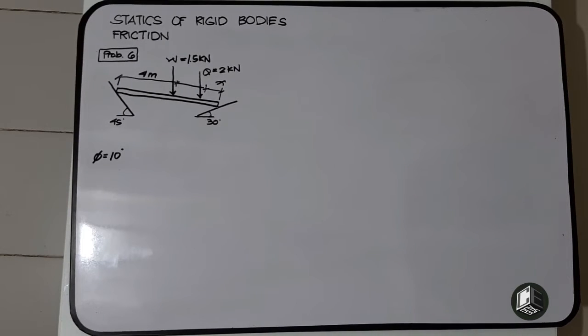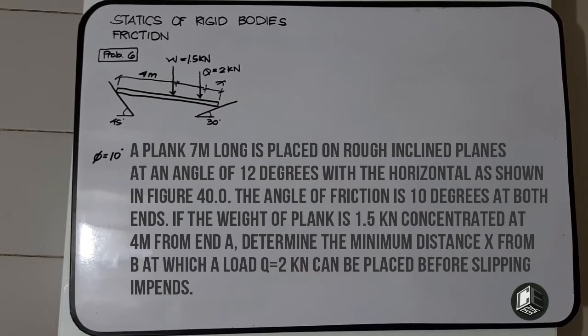This is problem number six for friction. A plank seven meters long is placed on rough inclined planes at an angle of 12 degrees with the horizontal as shown in figure 40.0. The angle of friction is 10 degrees at both ends. The weight of the plank is 1.5 kilonewtons concentrated at 4 meters from end A.